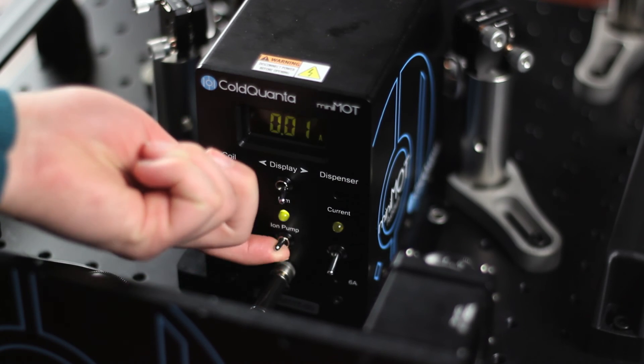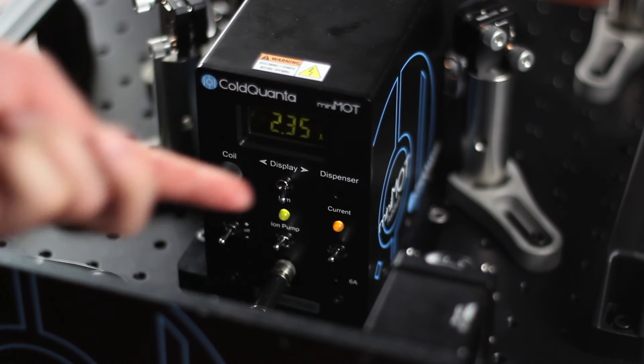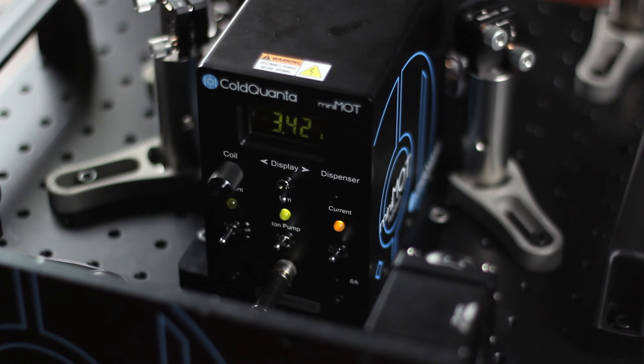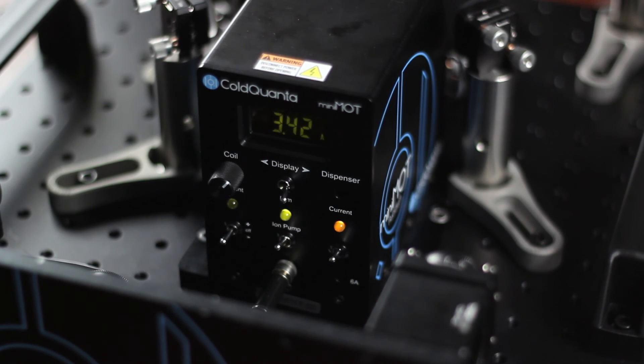We will now warm up the Mini-MOT 20 minutes before use. Turn on the ion pump, then the dispenser. It is preset to the appropriate current. Let it warm up for about 20 minutes to reach the appropriate vapor pressure.